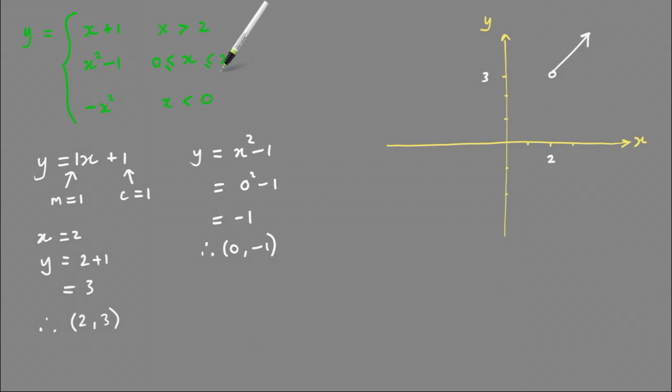Then doing the same thing with the right-hand endpoint, x is less than or equal to 2, so I'm going to let x equal 2. X equals 2, so y equals 2 squared minus 1, which equals 4 minus 1, which equals 3. Therefore, the point 2 comma 3 also belongs to that parabola.